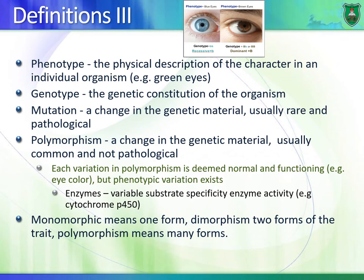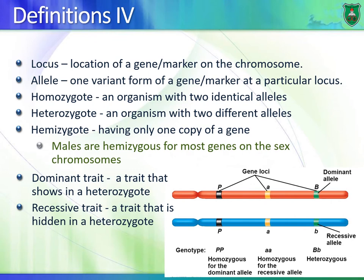All our genes are situated on chromosomes and located on specific regions. A particular gene is located in the same region on a chromosome in my DNA, your DNA, and everyone else's DNA. This location of a gene on a chromosome is known as a locus. The plural of locus is loci, L-O-C-I.